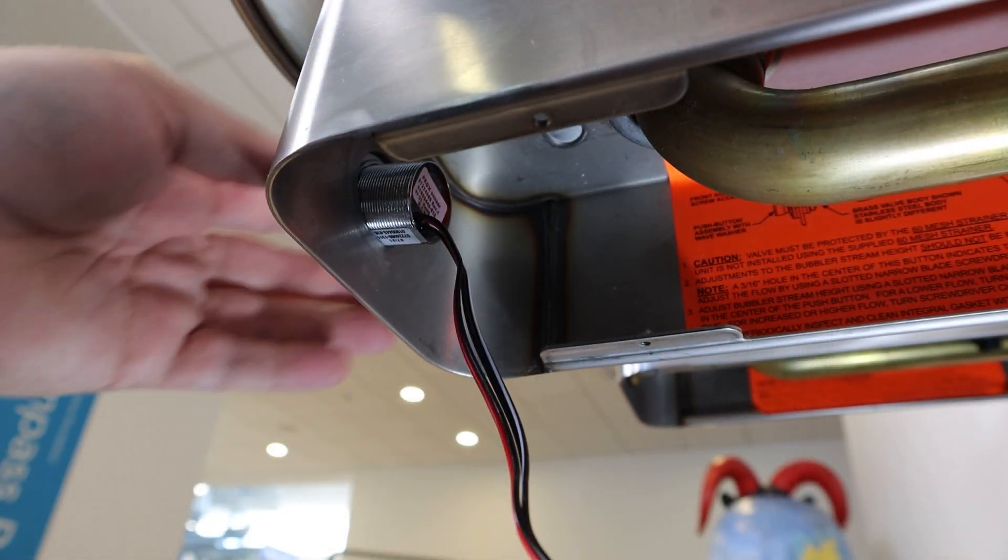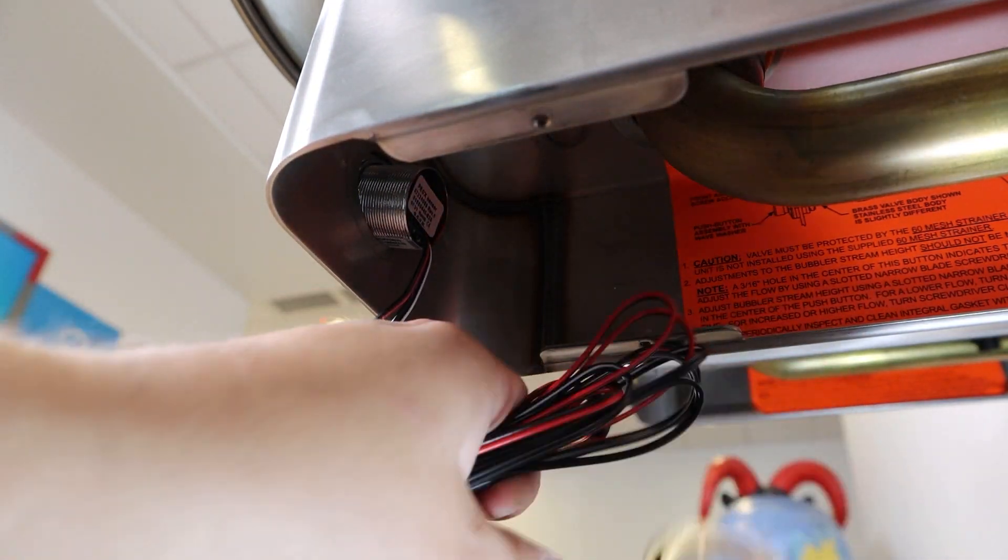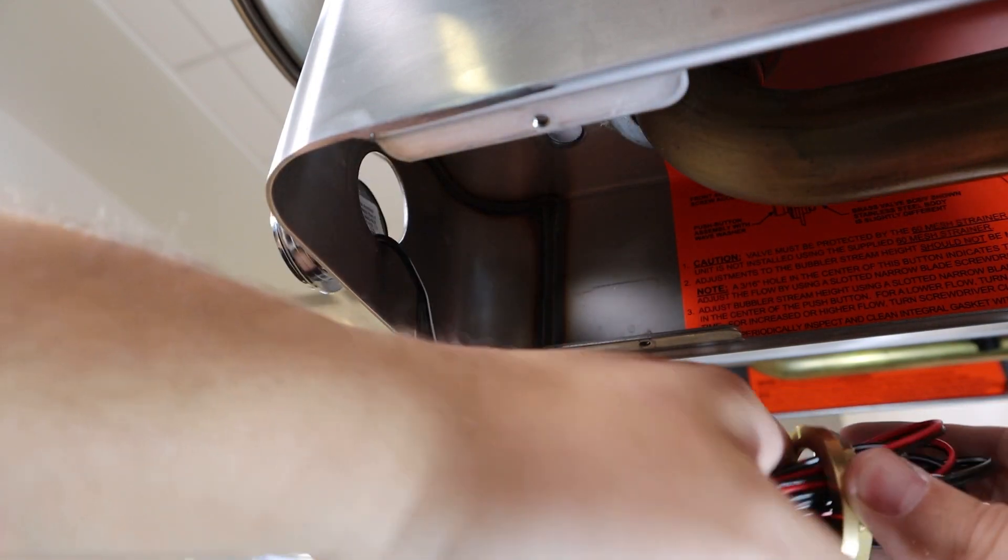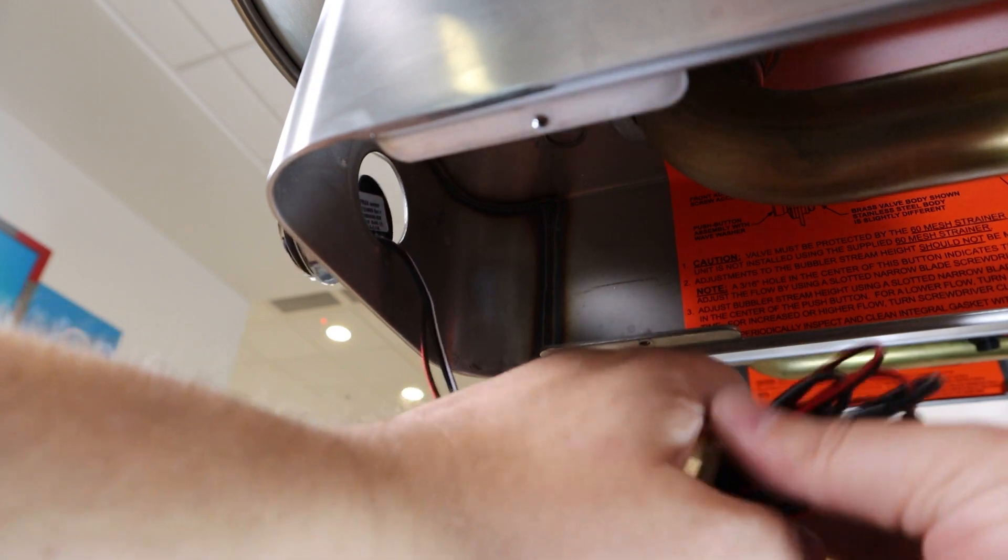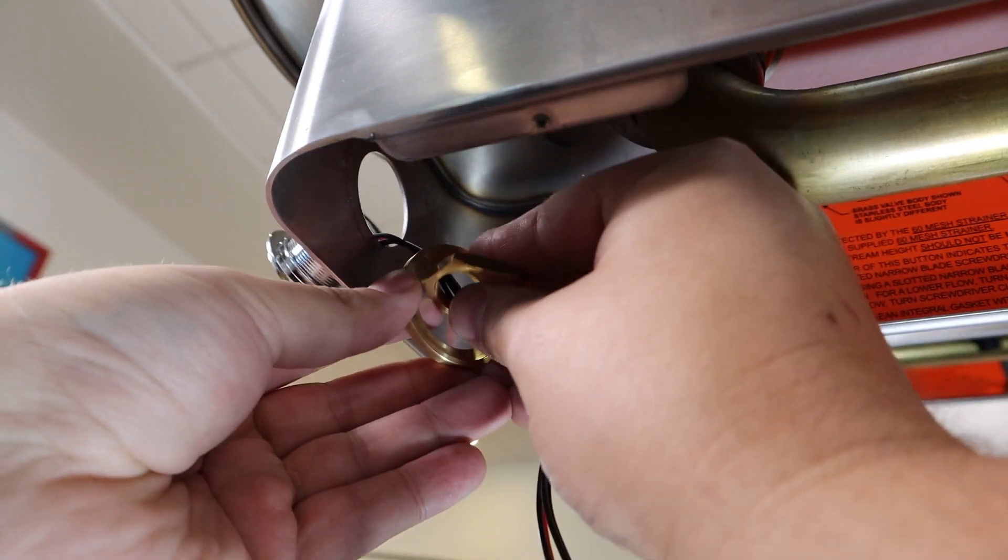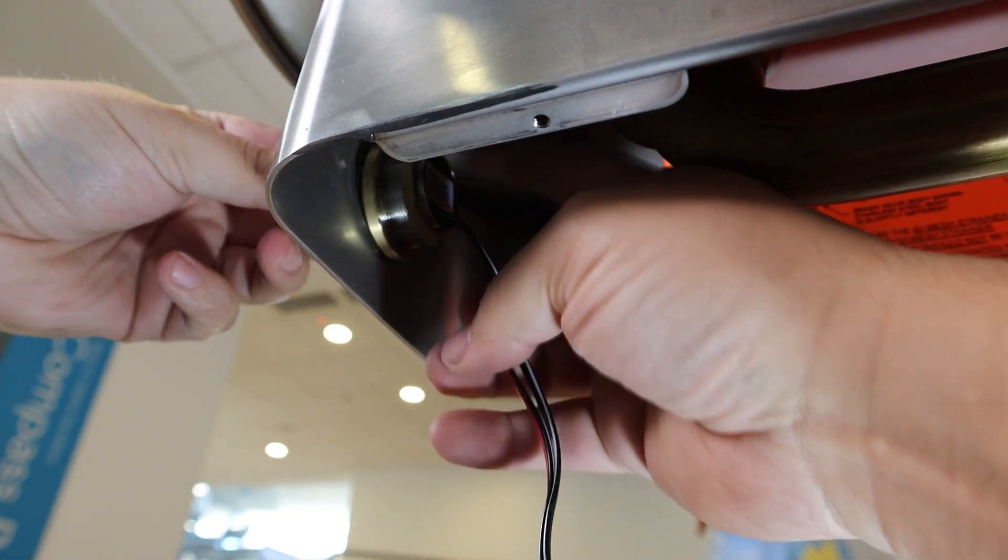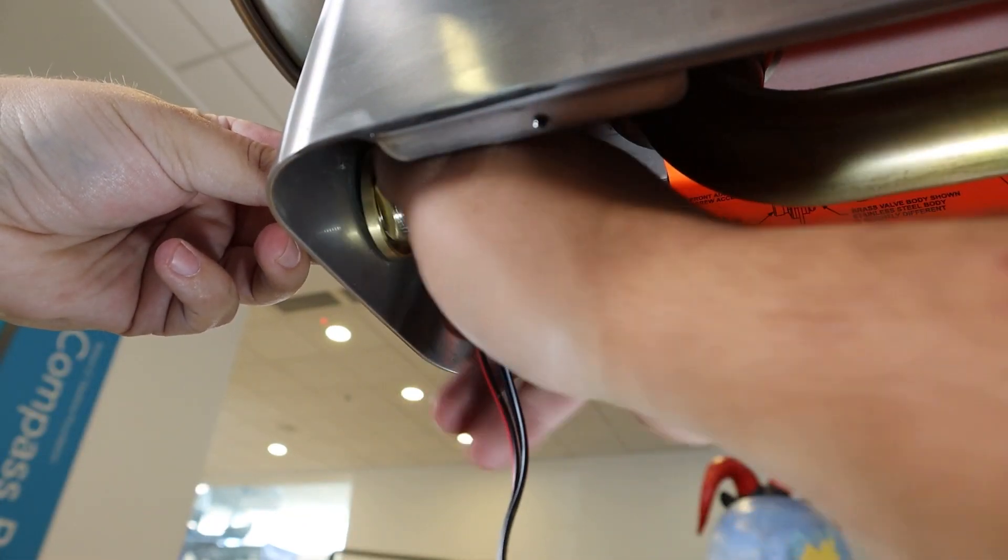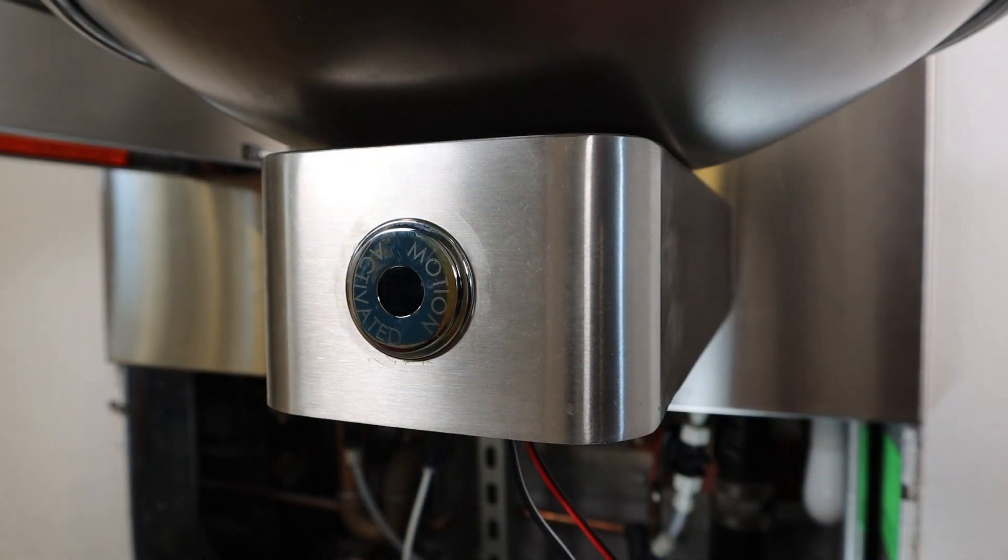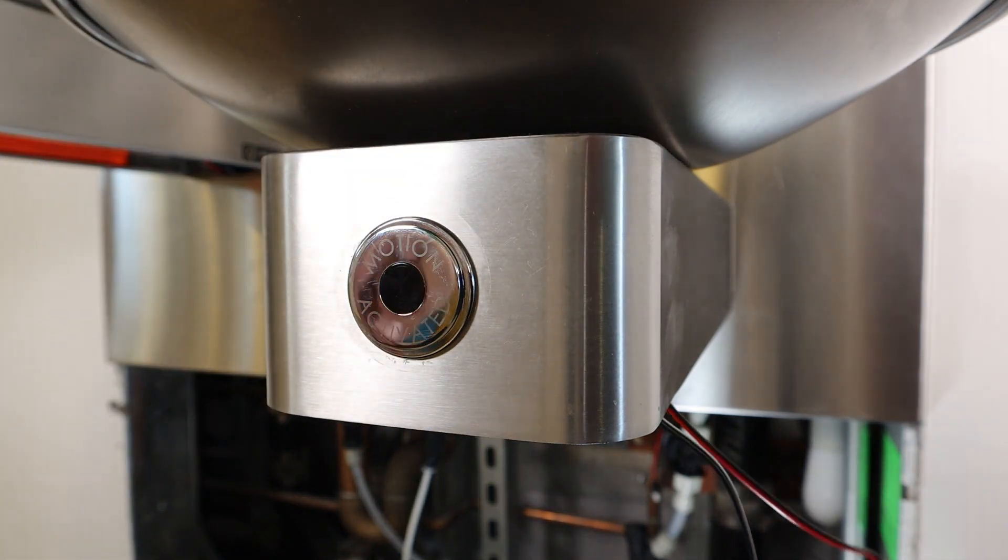Now, inside of the fountain body, replace the mounting hardware by again sliding both the nut and washer over the wiring bundle and re-thread them onto the sensor. Ensure that the text on the sensor is oriented correctly before tightening the nut and sensor into its final position.